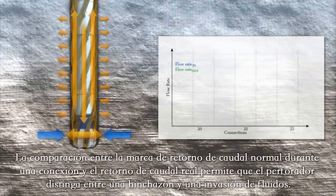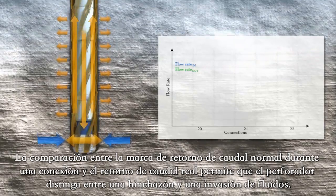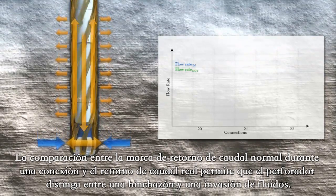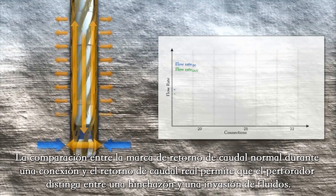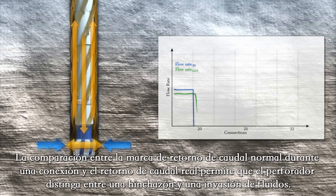Comparing the normal flowback signature during a connection against the actual flowback enables the driller to distinguish between ballooning and a kick.